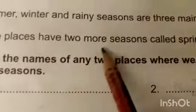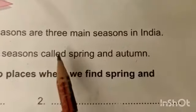Some places have 2 more seasons: spring and autumn. In fact there are 5 seasons — summer, winter, rainy, spring and autumn. But these 5 seasons are not everywhere; only some countries and some places have all 5 seasons. Otherwise there are 3 main seasons.